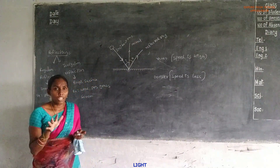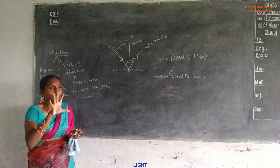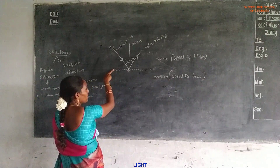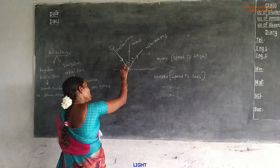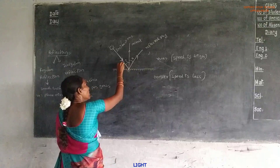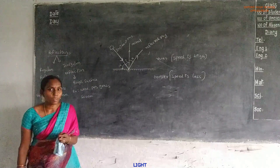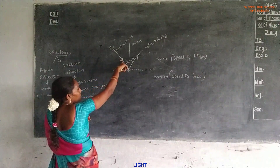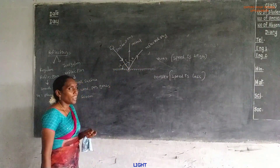A plane surface means a highly polished surface — reflection only takes place on that surface. The angle made by the incident ray with the plane surface is called the angle of glancing. The glancing angle is represented by the letter alpha.